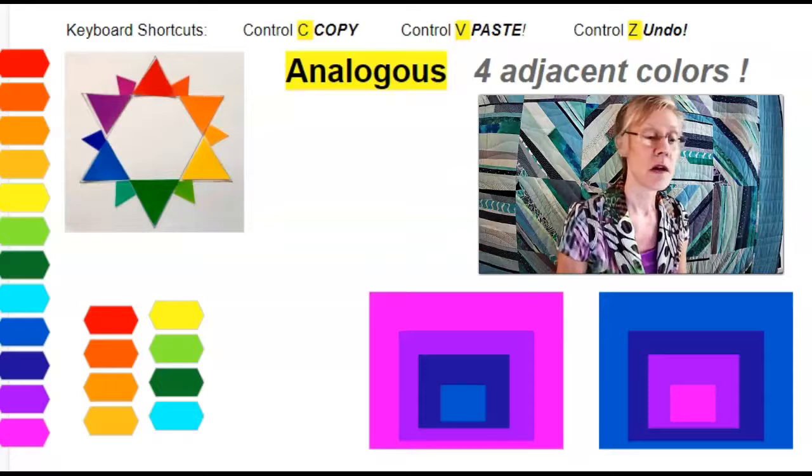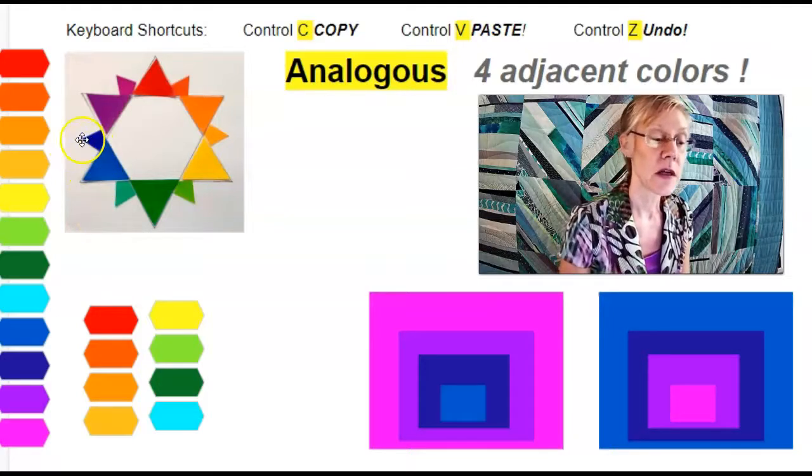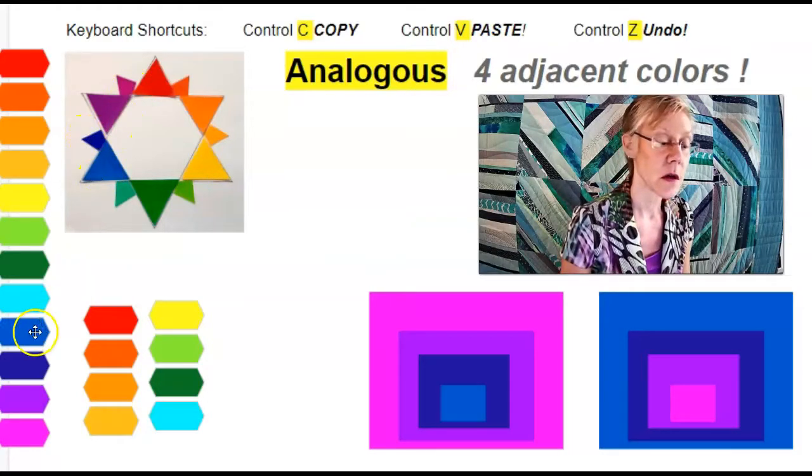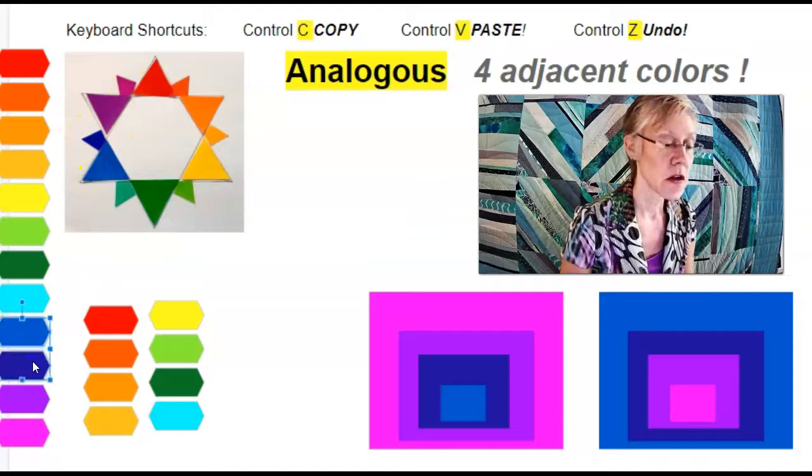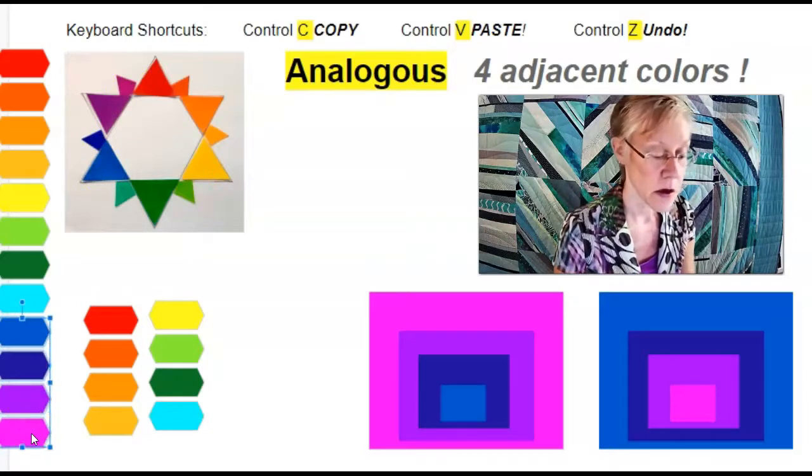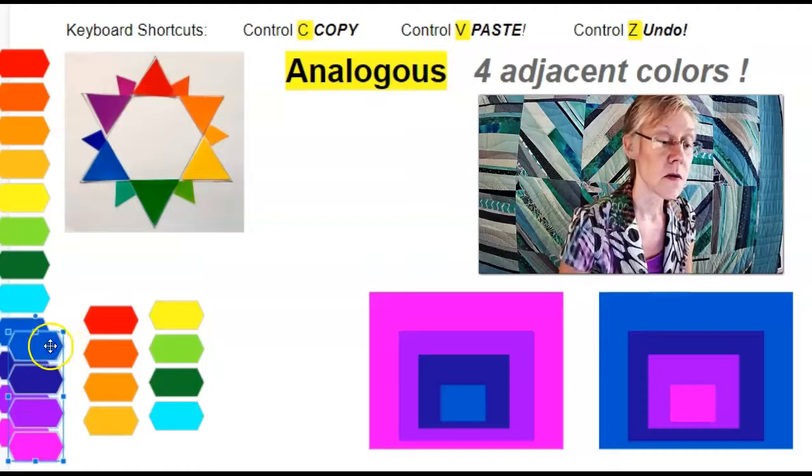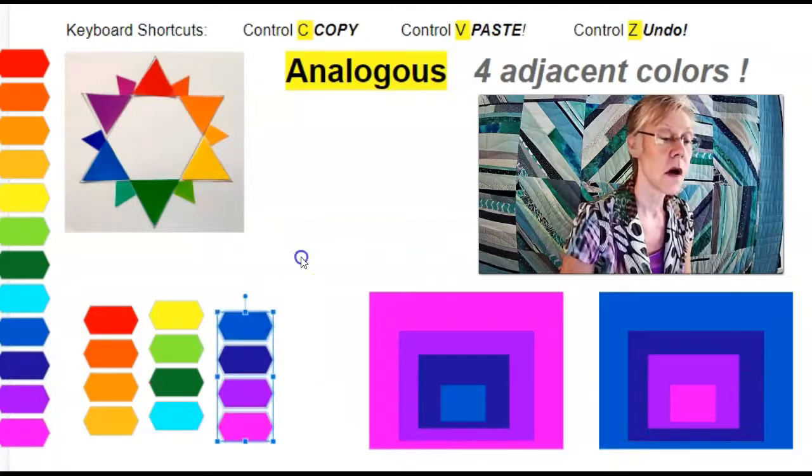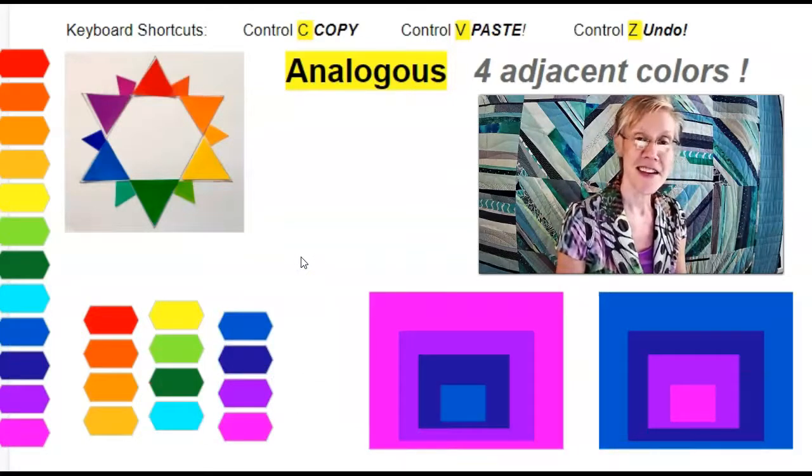Here's another example. Blue, indigo, purple, magenta. Primary, tertiary, secondary, tertiary. Those four colors are also analogous.